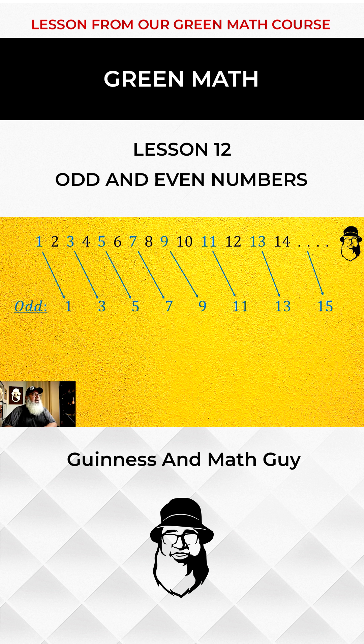The even numbers, they start at 2 and they also go up in 2s. So after 2, it's 4, 6, 8, 10, 12, 14, 16 and so on.